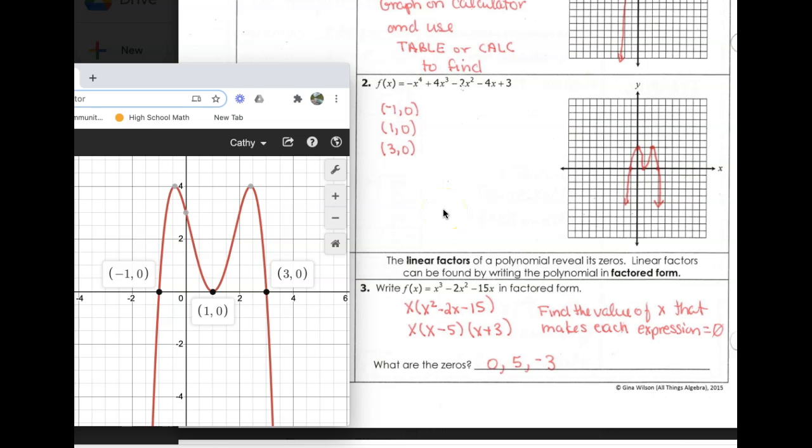So where's my other zero, you might ask? Because this graph has a turning point right at this zero, we say there is a multiplicity of two here. So we actually have two zeros at x = 1. We have one zero here and one zero here. That's how we get our four zeros.